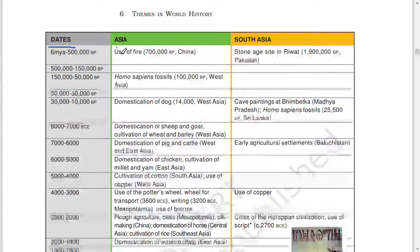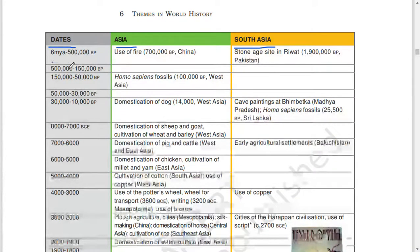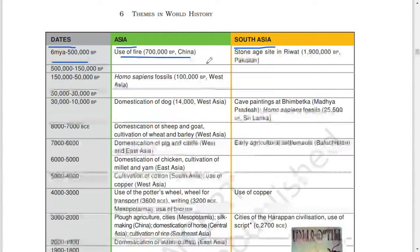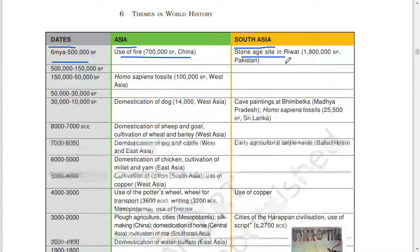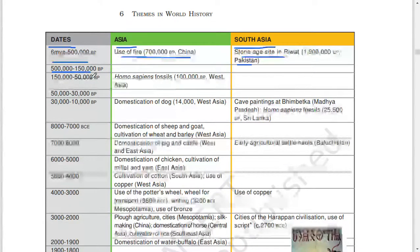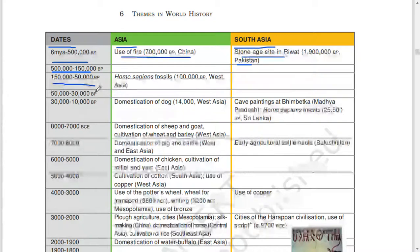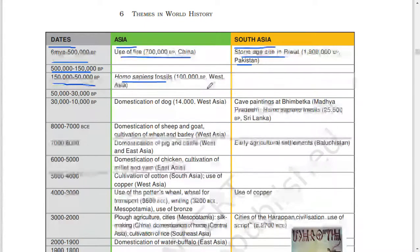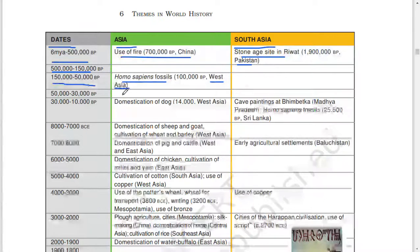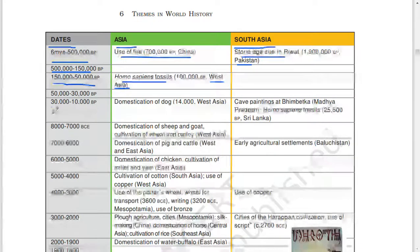Asia, South Asia. 6 MYA to 5 lakhs BP: use of fire, 7 lakhs BP, China. Stone Age site in Riwat, 19 lakh BP, Pakistan. 5 lakh to 1 lakh 50,000 BP. 1 lakh 50,000 to 50,000 BP: Homo sapiens fossils, 1 lakh BP, West Asia. 50,000 to 30,000 BP, 30,000 to 10,000 BP.